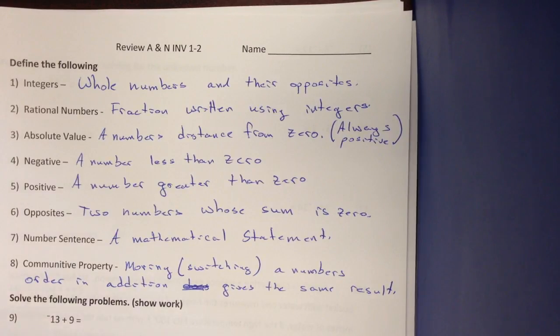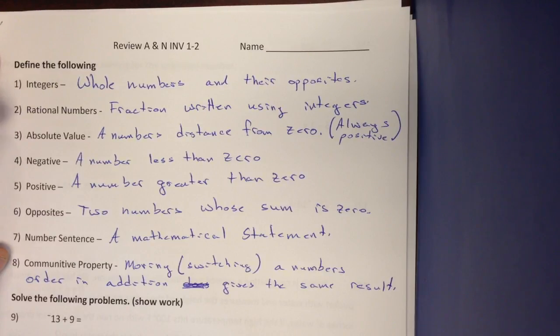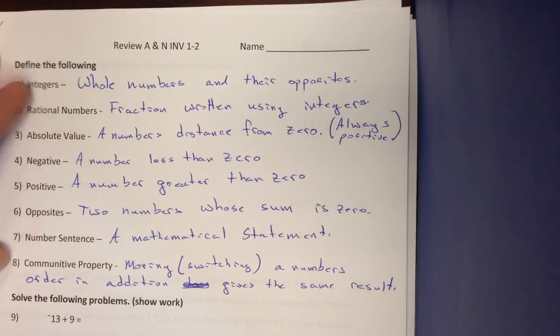Here we are working on a review for investigations 1 and 2 of accentuate the negatives. We have integers, whole numbers and their opposites. Rational numbers are fractions written using integers. So whole numbers and their opposites: negative 2, negative 1, 0, 1, 2, 3, 4. Those are integers.